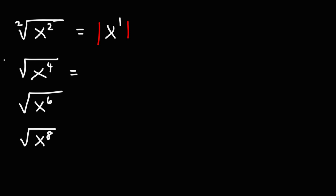For the next one, we have the square root of x to the fourth. Four divided by two is two. Since we have an even exponent as the result — not an odd exponent — we do not need to use the absolute value symbol, because whenever you square something it will always be positive.